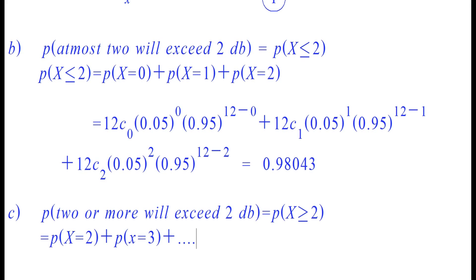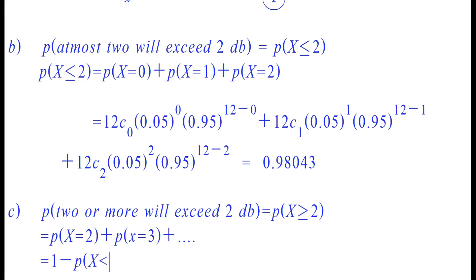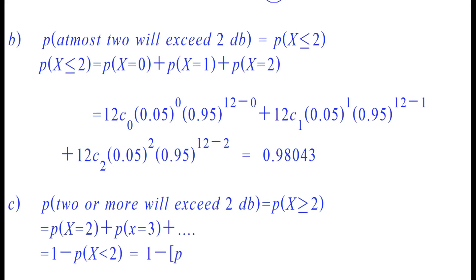Instead of finding all these values, we subtract the probability of x=0 plus probability of x=1 from the total probability 1. This gives the sum of probability from x=2 to x=12. Therefore, probability of x greater than or equal to 2 is equal to 1 minus probability of x less than 2, which is equal to 1 minus the quantity probability of x=0 plus probability of x=1.